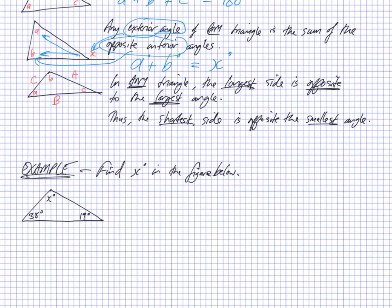And lastly, in any triangle, the longest side is going to be opposite to the largest angle. And therefore the shortest side is going to be opposite the smallest angle. So you can see this B is the biggest angle and opposite to it is the longest side. This C is the smallest angle and therefore opposite it is the shortest side.